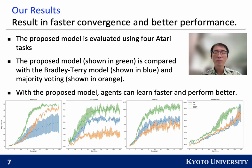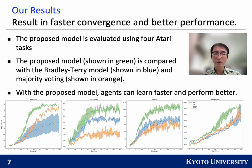We evaluate the proposed model using four Atari tasks and compare it with two baselines. We use this method to learn reward functions and train RL agents using these reward functions. In this curve, the y-axis shows the average cumulative reward of RL agents, while the x-axis is for training iterations. As you can see, our model results in faster convergence and better performance.